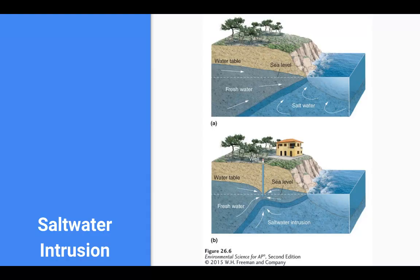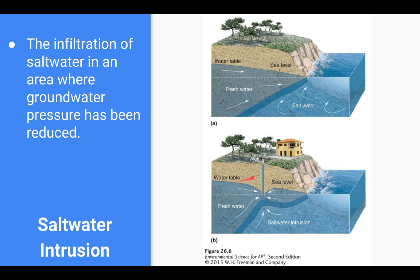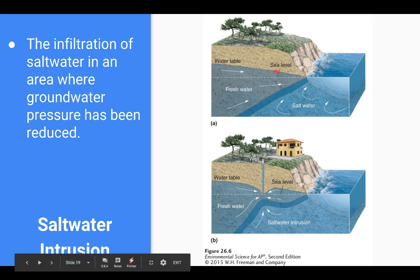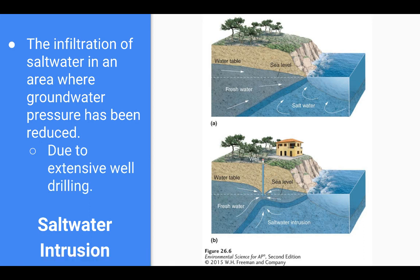Another problem along coastal areas is saltwater intrusion. Normally the freshwater underneath the land exerts enough pressure to keep saltwater where it should be — under the ocean. But when people move to coastal areas and multiple homes and businesses dig wells and pump excessively, the water table drops, allowing saltwater intrusion to mix with the freshwater. And then there's no more freshwater coming from that well.